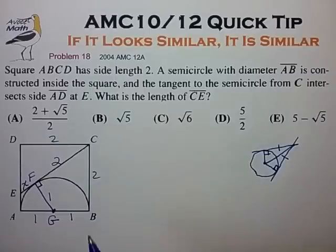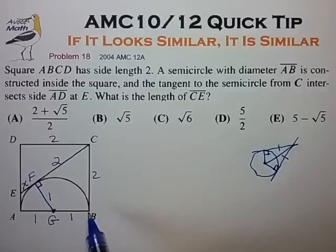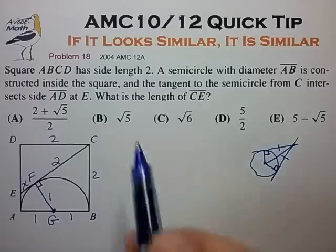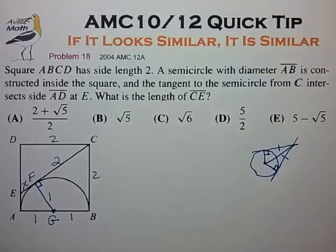At this point you may notice that quadrilateral CFGB looks very similar to quadrilateral GFEA. You could spend some time trying to convince yourself of that, but let's use our heuristic that if it looks similar, it is similar. Let's just assume they're similar for the time being to see if we can solve this problem.